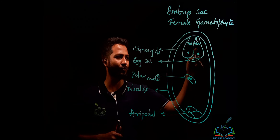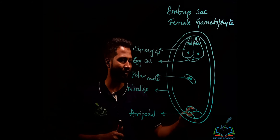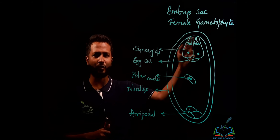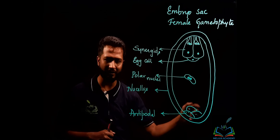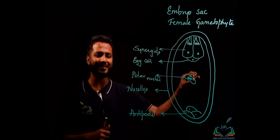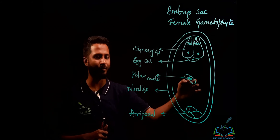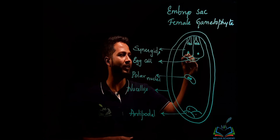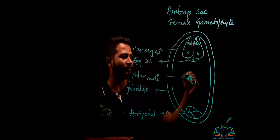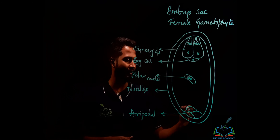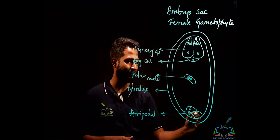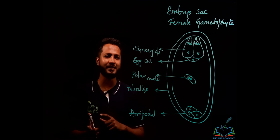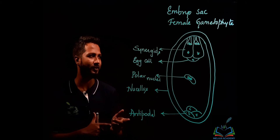Let us count the seven cells: three cells on the micropylar end, three cells on the chalazal end, and one cell at the center — three plus three is six, plus one equals seven cells. If we count the nuclei: one, two, three, four, five, six, seven, eight — eight nuclei. So a seven-cells, eight-nuclei condition is observed.